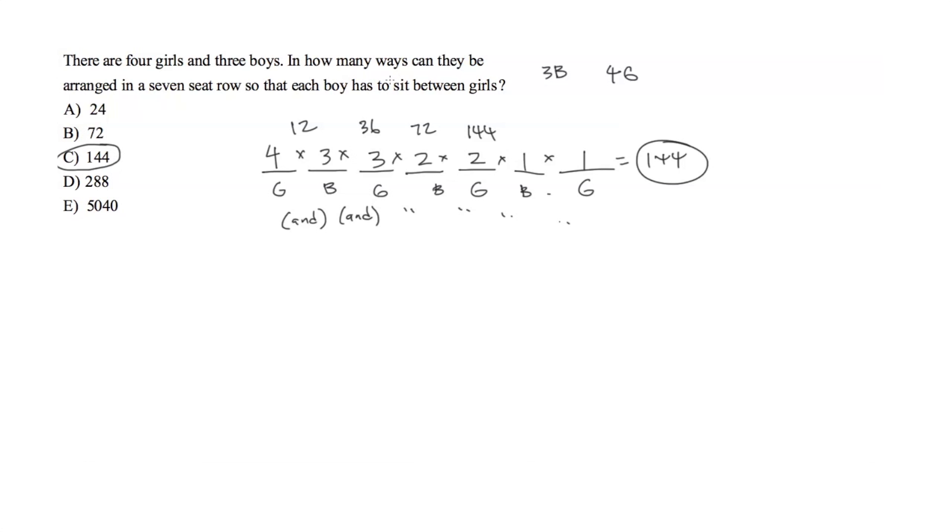So anytime you have these permutation slash combination questions, it's useful to know those equations. However, when there are exceptions, or when they impose a lot of these restrictions, it's often easier just to write out, just as we did here, hypothetical scenarios. So in this case, since they have to alternate between boy and girl, we know that girls have to be on either end.